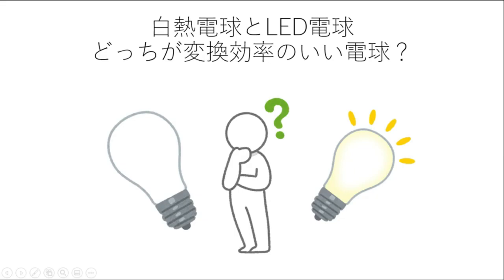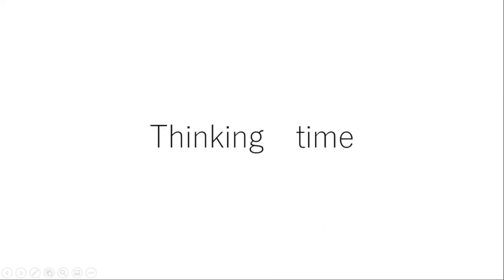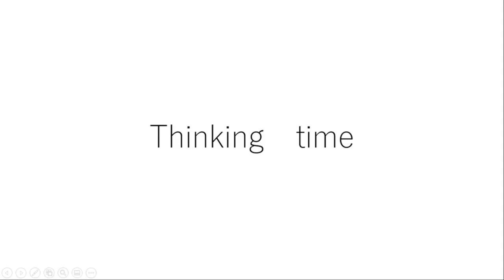ここで豆知識コーナー。電気エネルギーを100としたとき、白熱電球とLED電球が、それぞれ何%が光エネルギーに変換できていると思う？正解は、白熱電球が10%程度。LED電球が30から50%程度なんだ。だから、世の中の電球はLED主体になっているんだね。